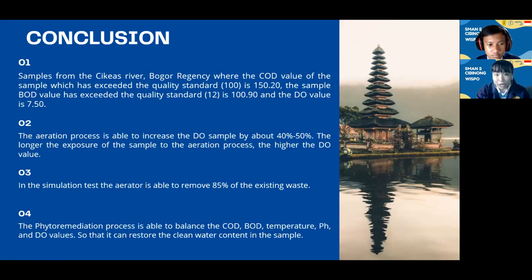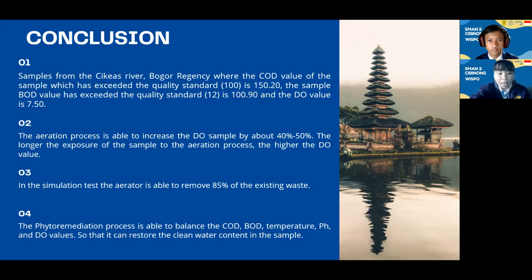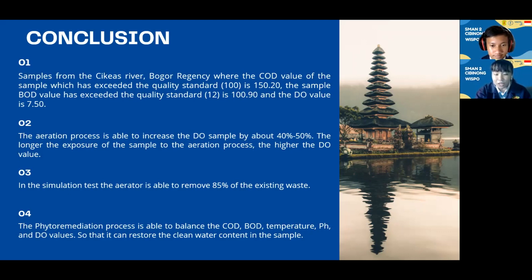We have four conclusions. First, the water sample from the Ciujung River in the Bogo region shows that the COD, BOD, and DO values have exceeded the quality standard. Second, the aeration process is able to increase the DO of the sample by about 40% to 50%. Third, in the simulation test, the aerator is able to remove 18.5% of the existing waste. Fourth, the phytoremediation process is able to balance the COD, BOD, temperature, pH, and DO values so that it can restore the clean water content in the sample.